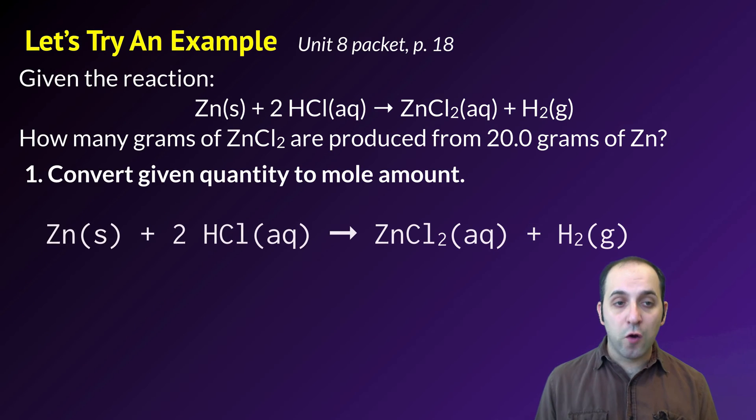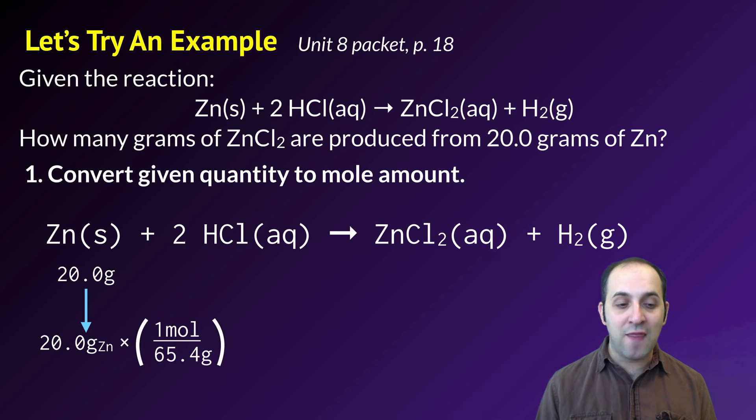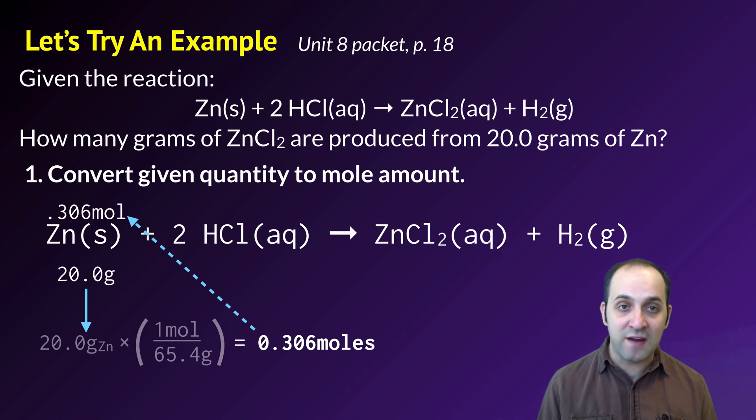So to work through this, I'm going to go through the steps. The first thing I need to do is I need to convert the given quantity to an amount of moles. I'm given a quantity of 20 grams of zinc. In order to convert that to moles, I'm going to multiply that by a conversion factor with the molar mass of zinc on the bottom, 65.4 grams, and moles on the top. This winds up dividing 20 by 65.4, I get 0.306 moles. That's how many moles of zinc I have to start.